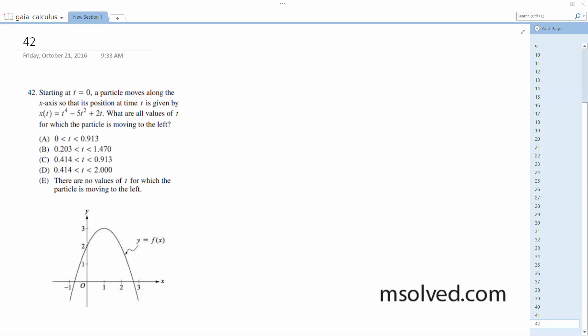Alright, we have our equations here. Well, we want to find what the particle... Particle moves along the x-axis and has a position at time t is given by the following equation. What are the values for which the particle moves to the left?